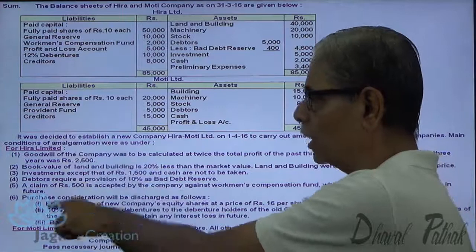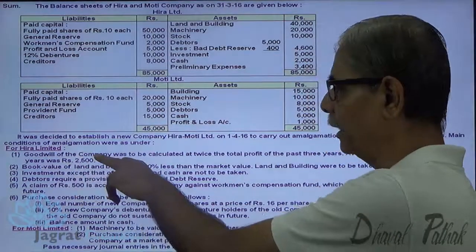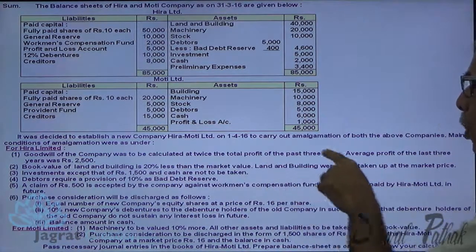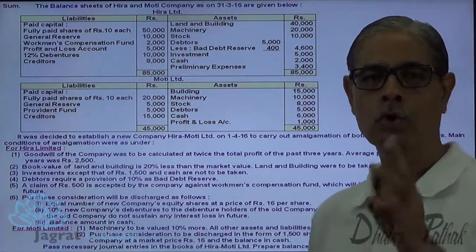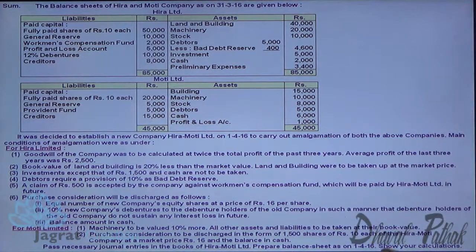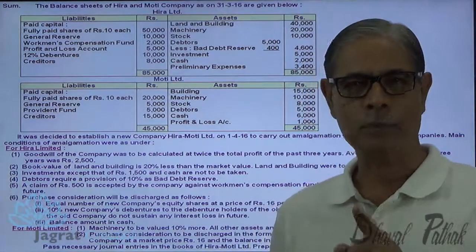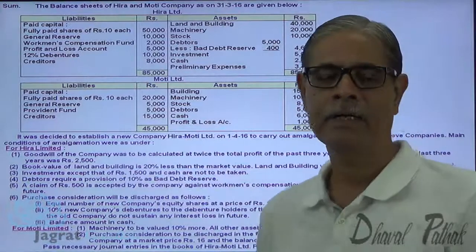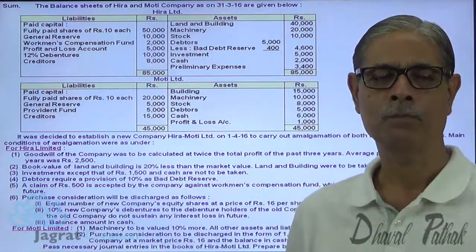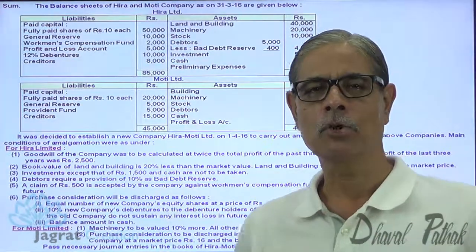These are the conditions for Hira Limited. Goodwill of Hira Limited was to be calculated as twice the total profit of the past 3 years. The average profit for the last 3 years is 2,500. So total profit of 3 years is 2,500 multiplied by 3, which equals 7,500. Double thereof is the value of goodwill, so 15,000 is the value of goodwill.